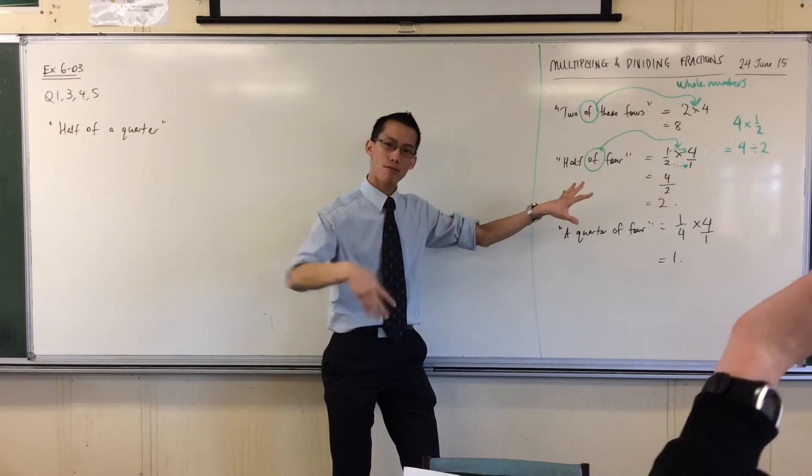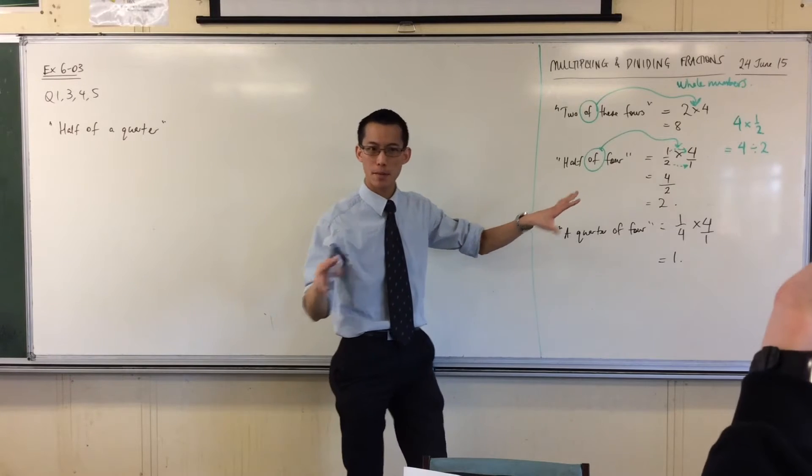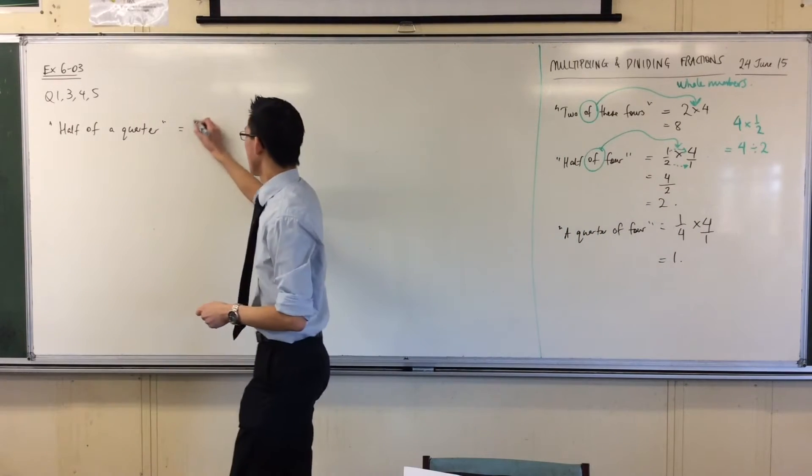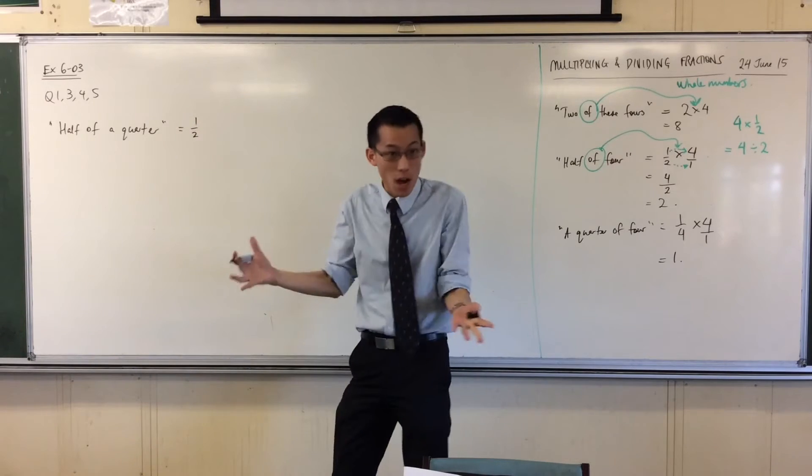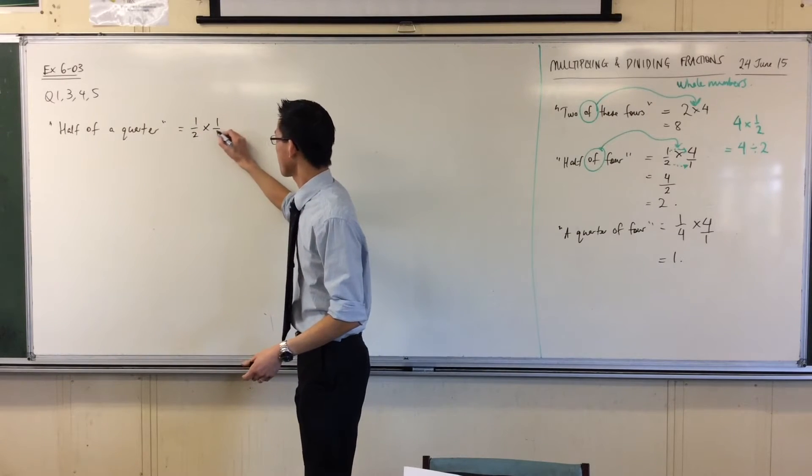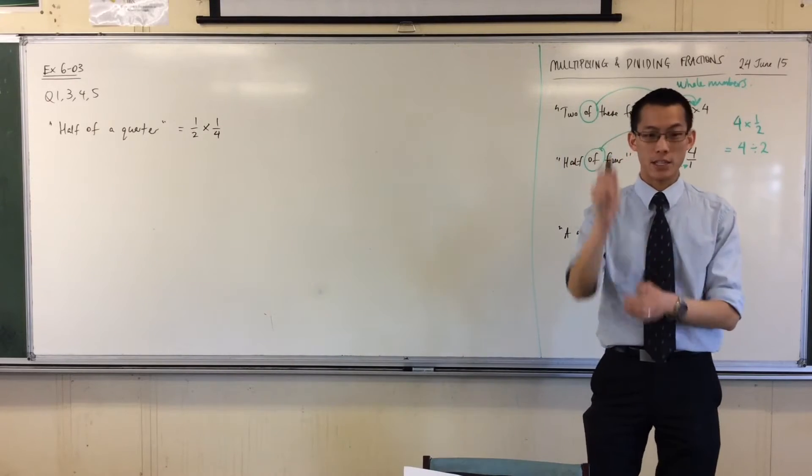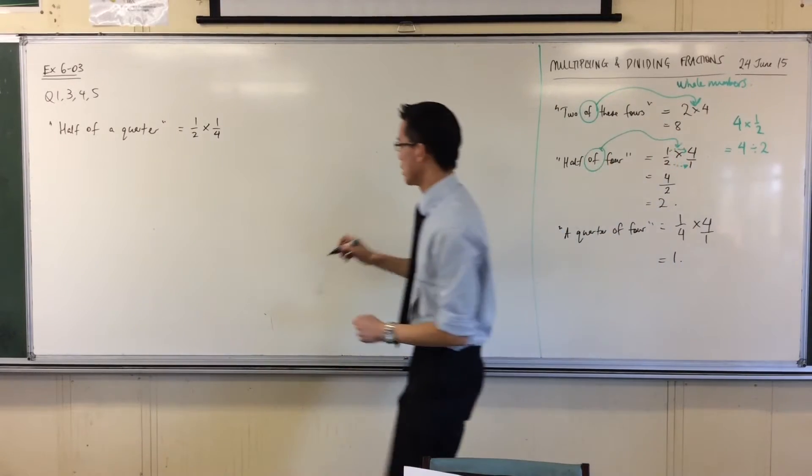Following this pattern, how do I write this in terms of numbers? Maybe someone hasn't said something yet. Yeah, right? Half times a quarter. Very good.